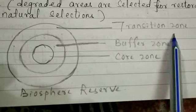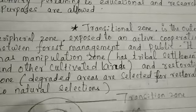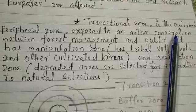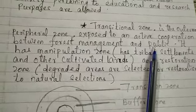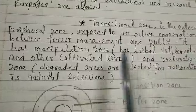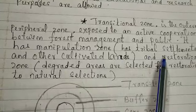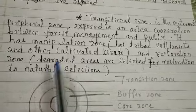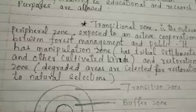The outermost zone is called the transition zone or peripheral zone. It is exposed to active cooperation between forest management and the public. Here, cultivation, manipulation, restoration, and other activities are allowed. It includes tribal settlements and cultivated lands, as well as a restoration zone where degraded forest areas are worked on and restored to natural conditions.